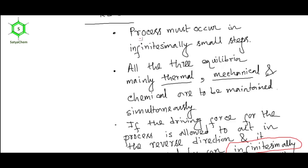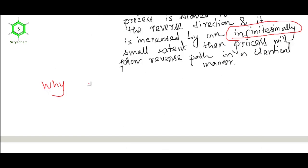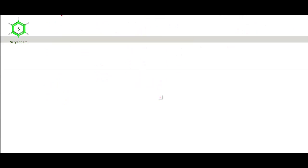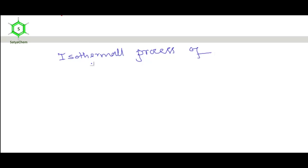Here I am emphasizing on step size — that is, infinitesimally small. Why are infinitesimally small steps required for a reversible process? For this, we need to consider an ideal gas undergoing an isothermal process of expansion or compression.